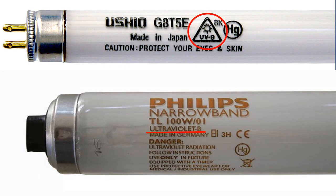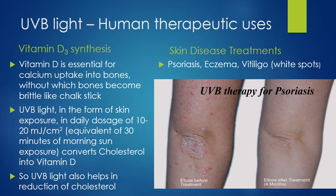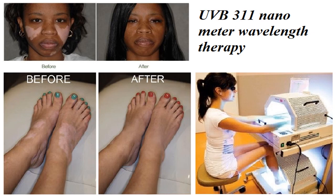UVB light converts cholesterol into vitamin D in humans via skin. In human therapeutic use, UVB light is helpful in vitamin D3 synthesis. Vitamin D is essential for calcium uptake into the bones; without it, bones become brittle like a chalk stick. Daily doses of 10 to 20 millijoules per centimeter square — equivalent to 30 minutes of morning sun exposure — convert cholesterol into vitamin D. UVB light also helps in reduction of cholesterol and is used in skin disease treatments like psoriasis, eczema, and vitiligo. Narrow band UVB at 311 nanometer wavelength is very helpful in treating vitiligo and eczema.